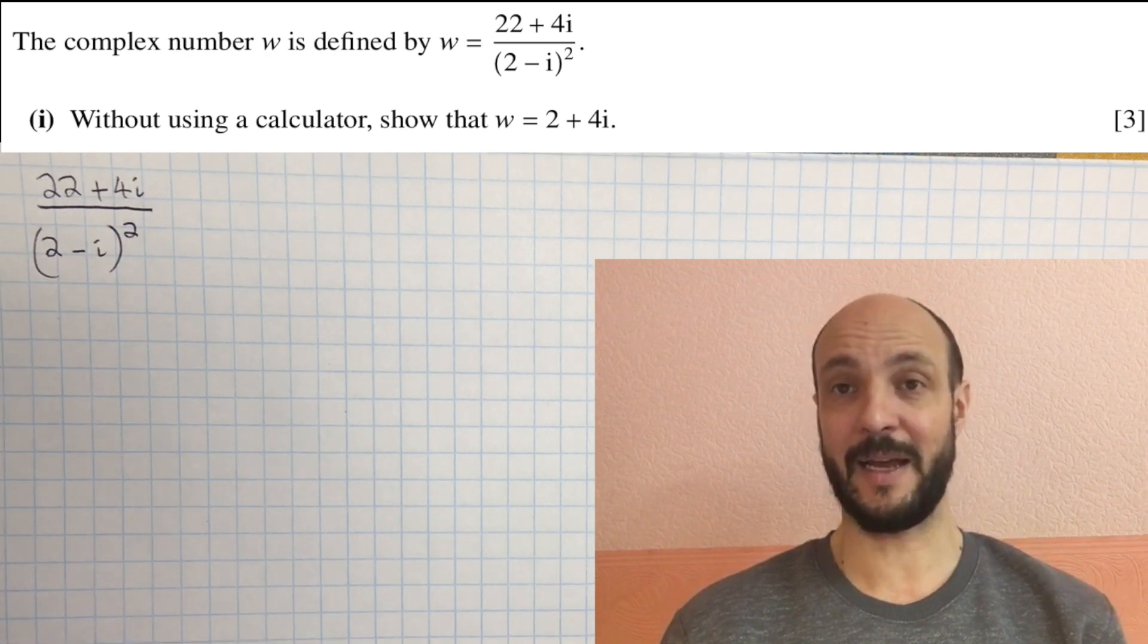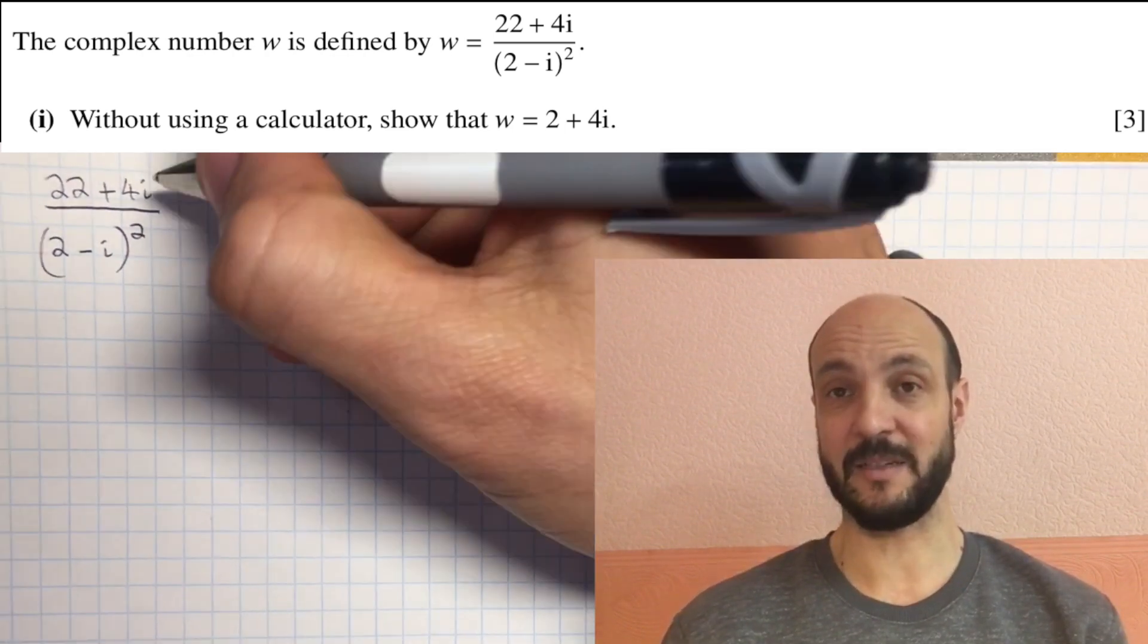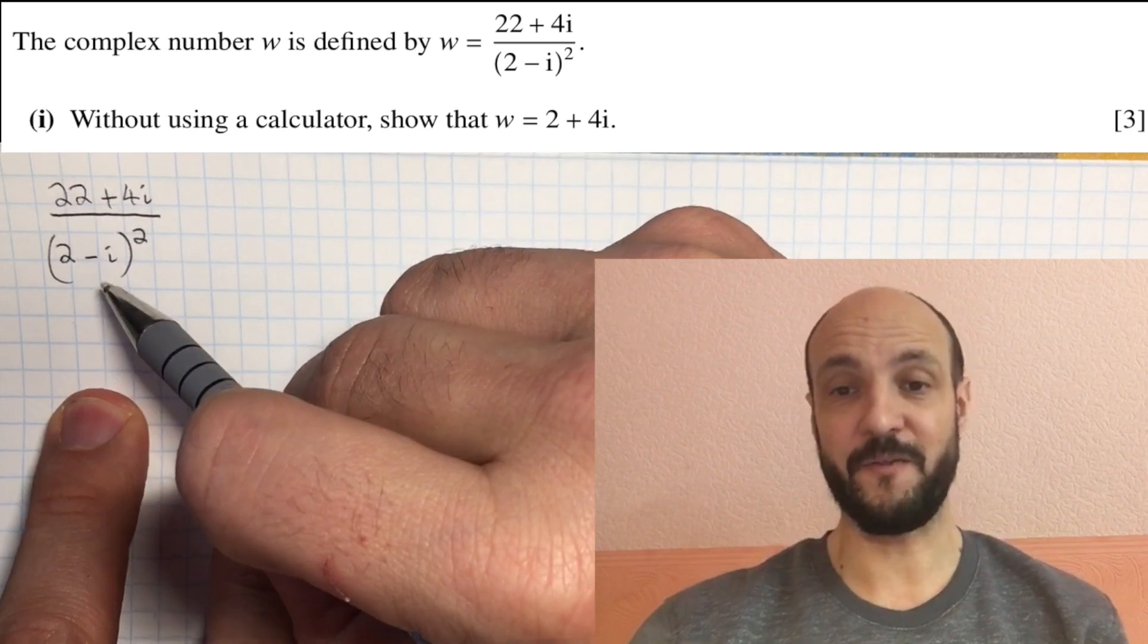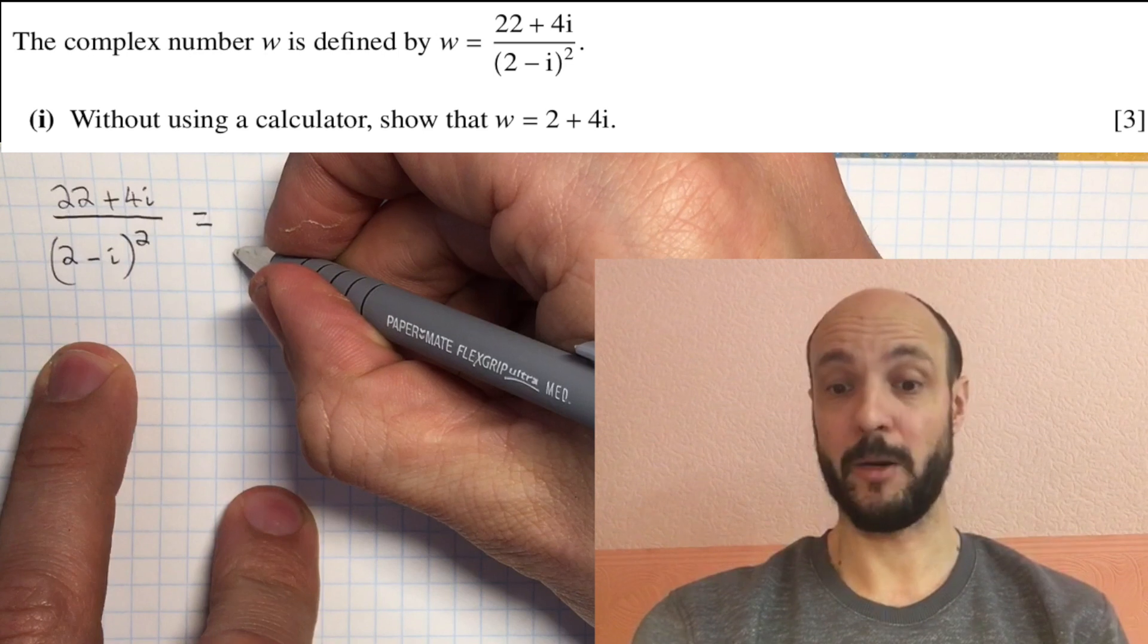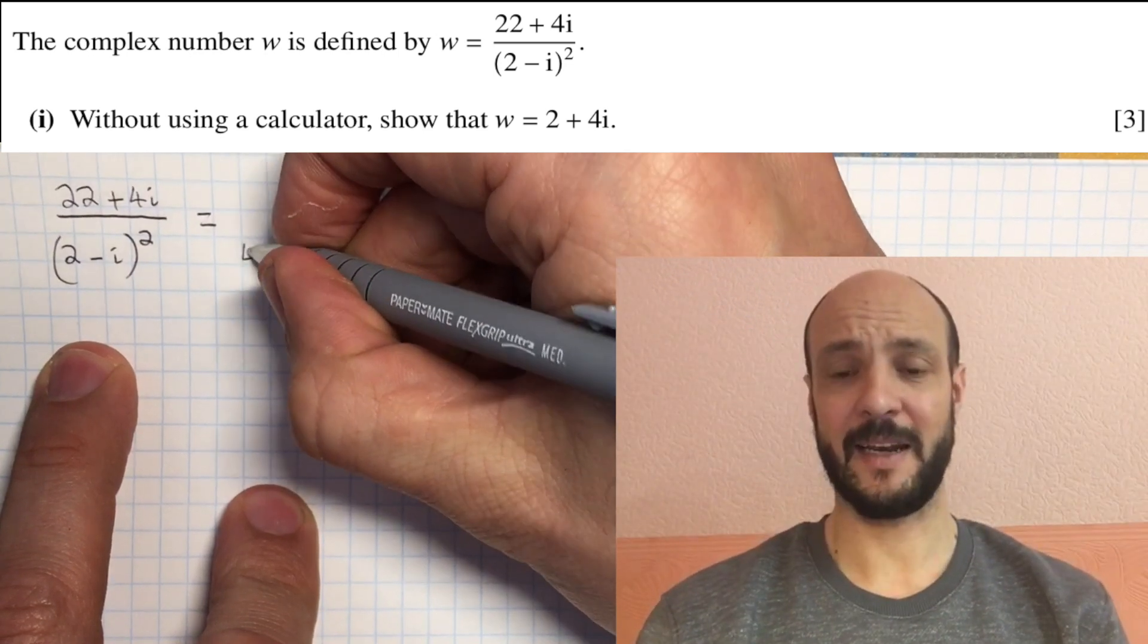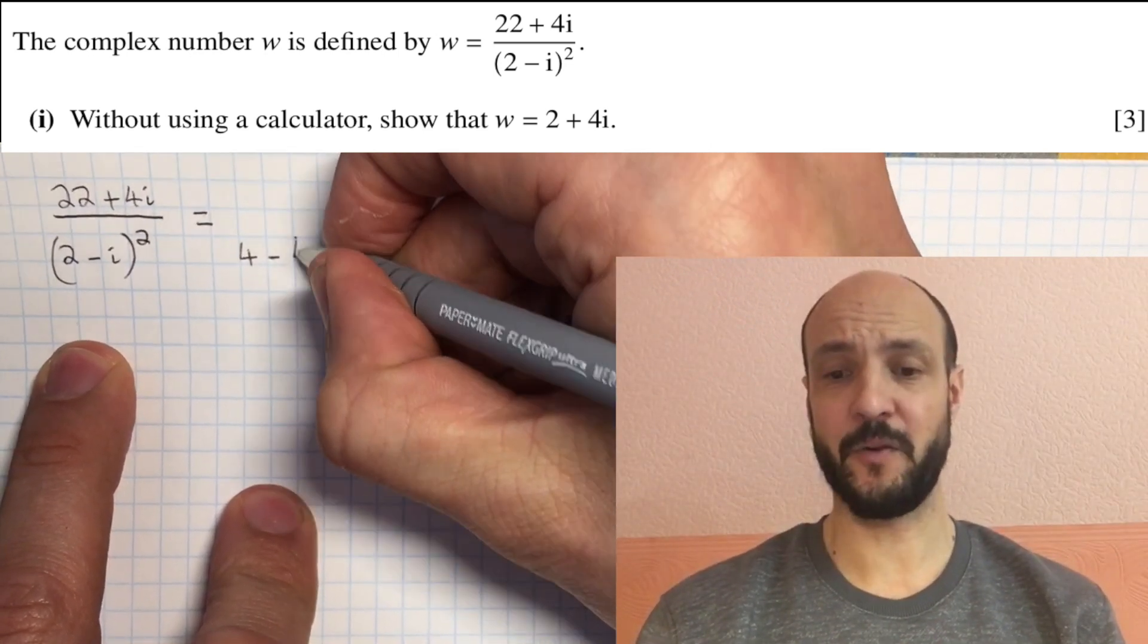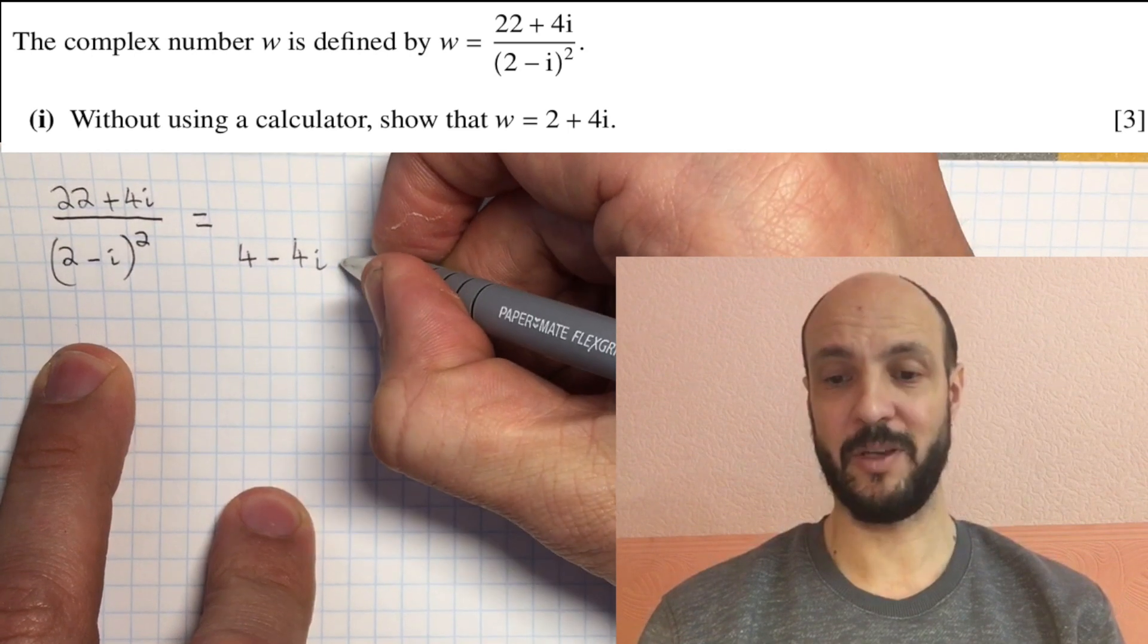And if you look, we've got 2 minus i squared there. So one way to do it is to say let's start off by expanding what we've got on the bottom there. So 2 minus i squared is 2 minus i times by 2 minus i, which is 4 minus 4i minus 1. So if we collect the like terms, 4 minus 4i minus 1 is 3 minus 4i.